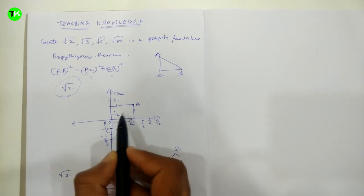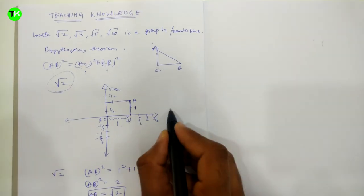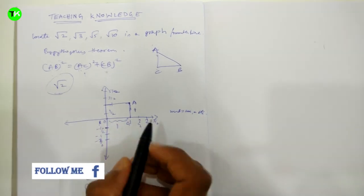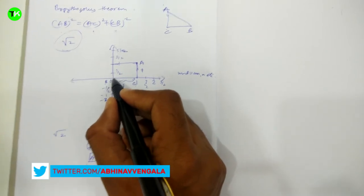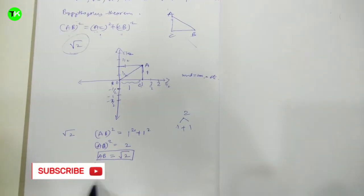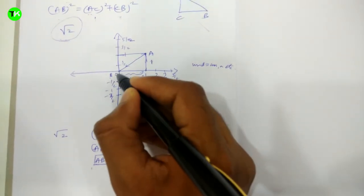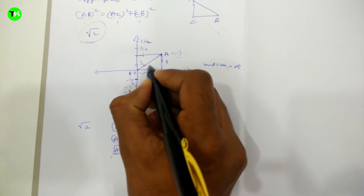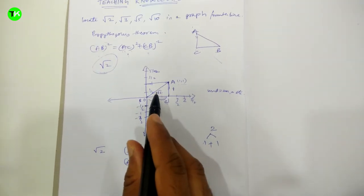By the Pythagorean theorem, the distance AC is 1 unit. You can use centimeters, meters, or any standard unit. By joining origin B to point A, the hypotenuse goes from the origin to point (1, 1) on the graph. Since we derived AB = √2, this line represents √2 on the number line.